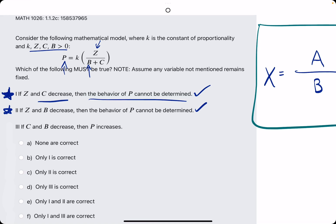Number three, if C and B decrease, C is in the denominator, B is in the denominator. If they both decrease, then P increases. Is that true?